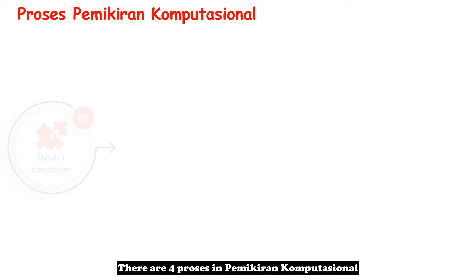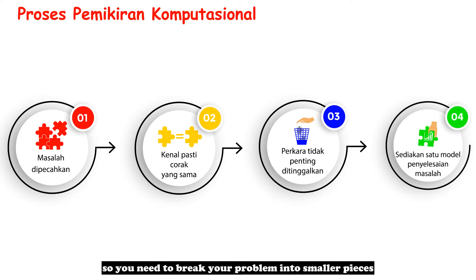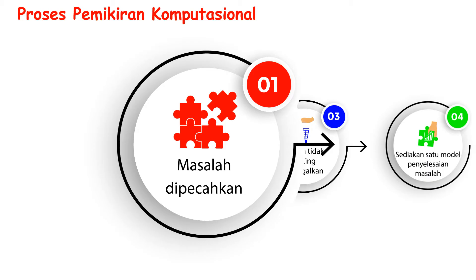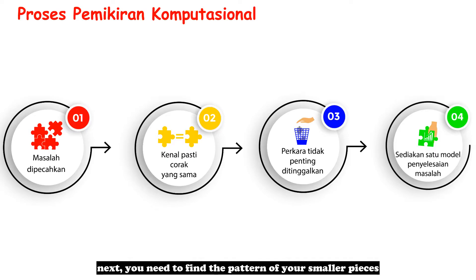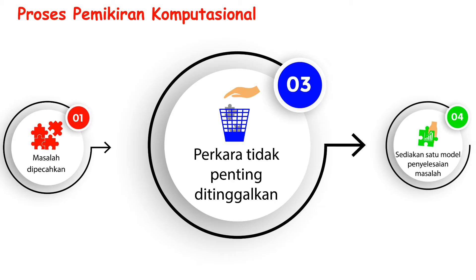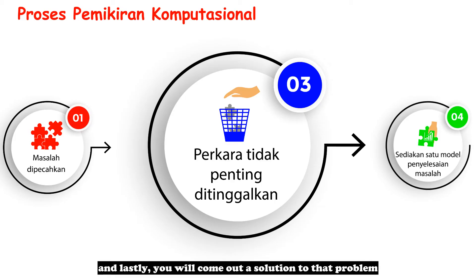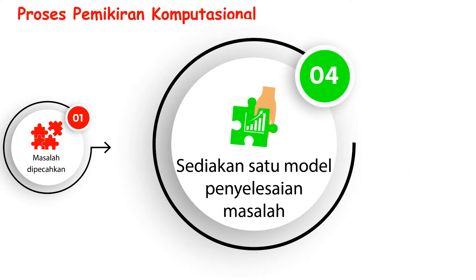Proses Pemikiran Komputasional. There are four processes in Pemikiran Komputasional. Let's say you have a big problem you want to solve — you need to break your problem into smaller pieces (masalah dipecahkan). Next, find the pattern of your smaller pieces (kenal pasti corak yang sama). After that, leave out the unimportant pieces (perkara tidak penting ditinggalkan). Lastly, prepare a solution to the problem (sediakan satu model penyelesaian masalah).